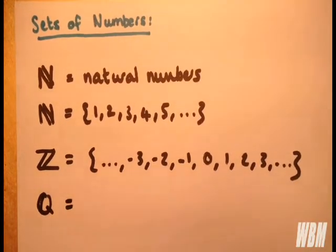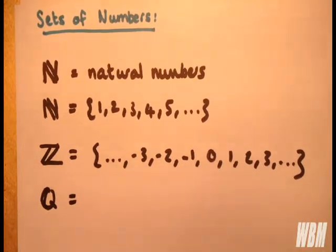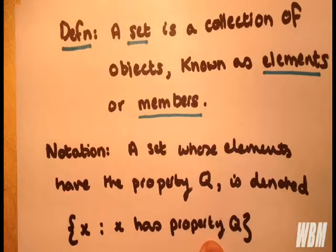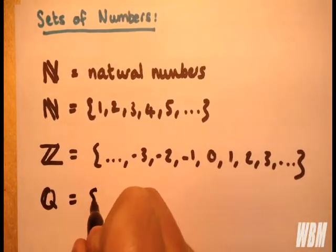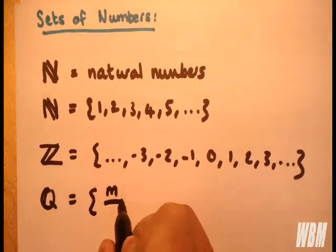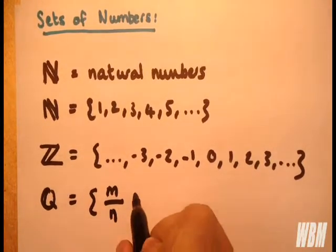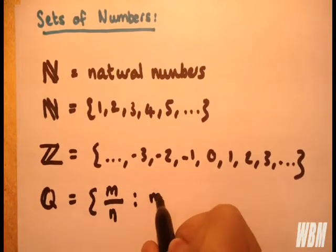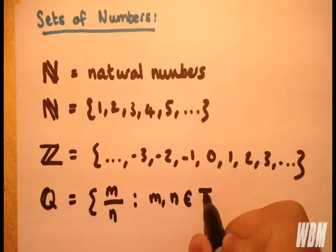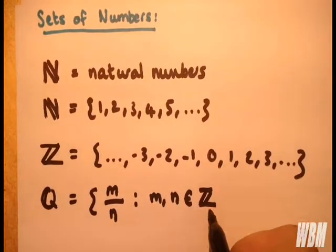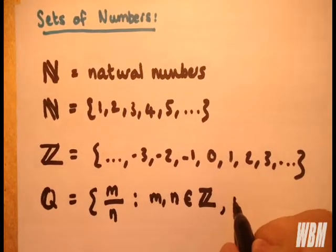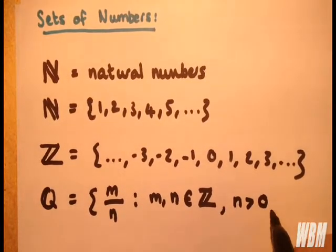Now we're going to see the notation from here when we're writing about the rationals. So we have rationals are numbers m over n such that m and n are elements of the set of integers, and n is positive.